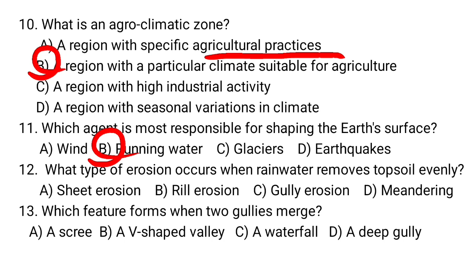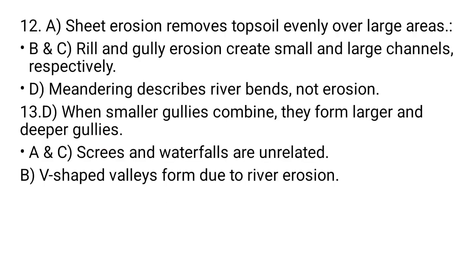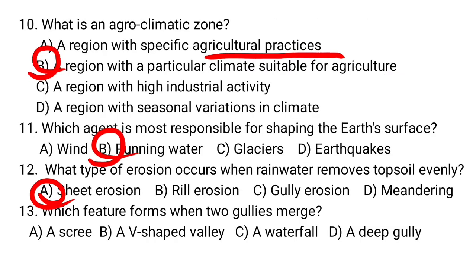A deep gully is formed when two gullies merge together — D is the correct answer. V-shaped valleys form due to river erosion. Screes and waterfalls are unrelated to gully merging.